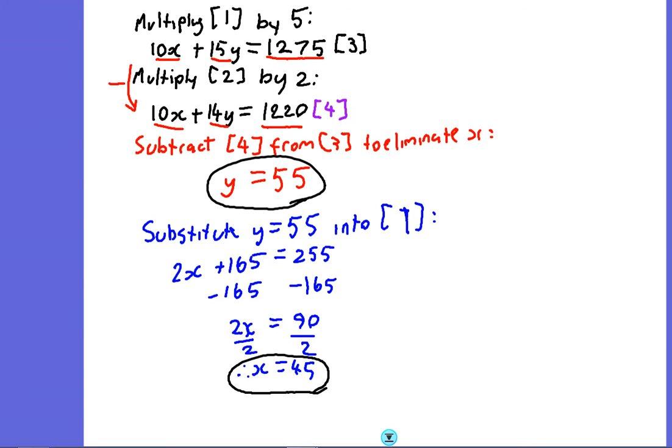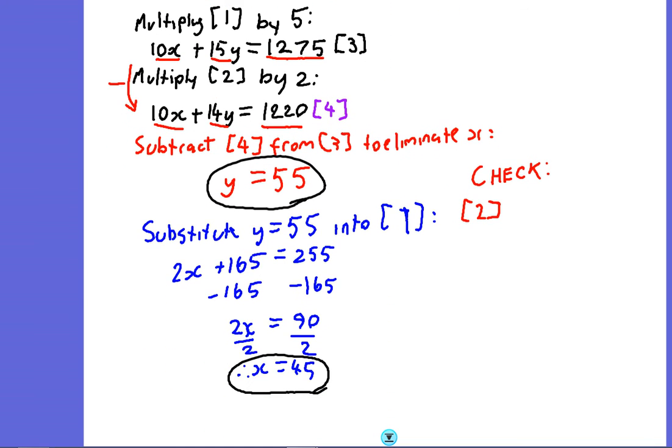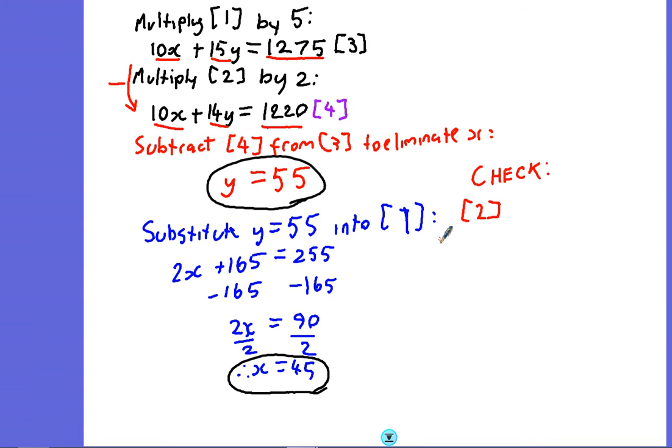But before we leap in and write that as our answer in words, let's just do a check. We've already put the value for y into equation 1, so we just have to check in equation 2. Equation 2 is 5x + 7y = 610. So we've got 5 times 45 plus 7 times 55—those are quite large numbers, at least they're whole numbers—equals 610, we hope. And when we do this on our calculator, we get 225 + 385, which equals 610. So we've got the right answer.